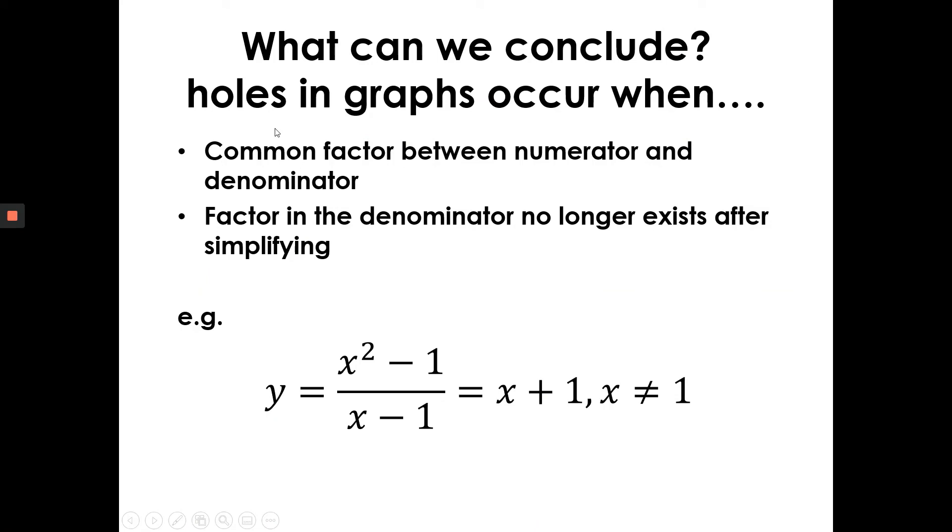In summary, holes in graphs occur when there's a common factor between the numerator and denominator. And the factor in the denominator no longer exists after simplifying.